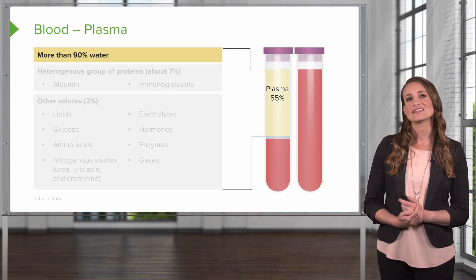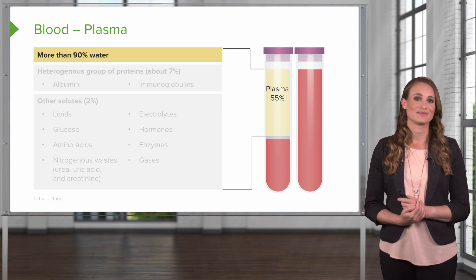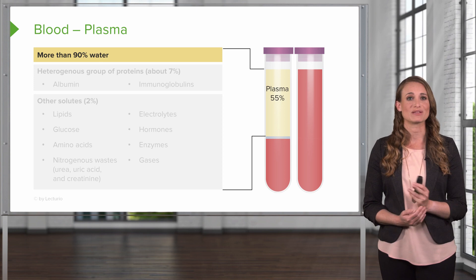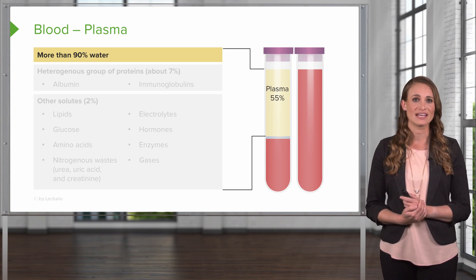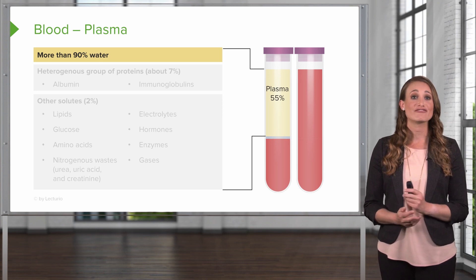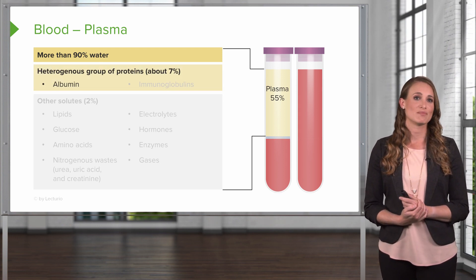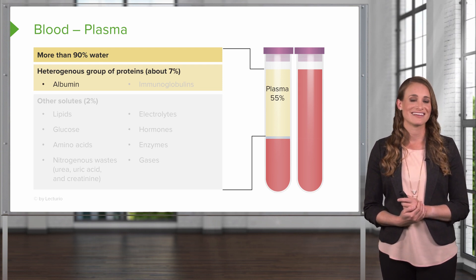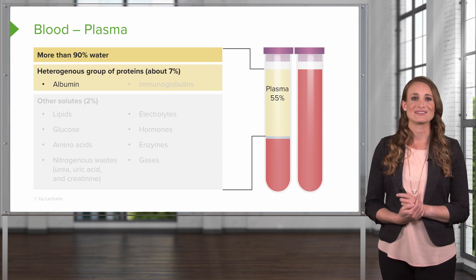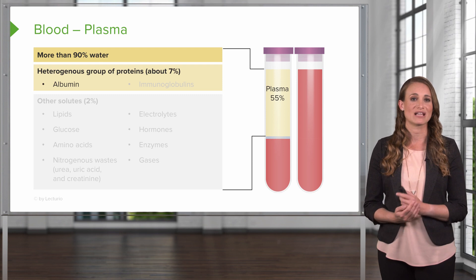Plasma is the liquid portion of the blood, and it's a complex solution containing more than 90 percent water. The water can move between the plasma and the body's cells and other extracellular fluid, and it's available to maintain hydration to the tissues. Every living cell within the body relies on this water. Plasma is a very protein-rich solution compared to the extracellular fluid, and about seven percent of the plasma is made of proteins. These plasma proteins can exert the osmotic effect to control the water movement from the extracellular fluid to the plasma.